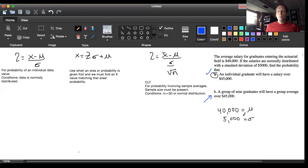The new information in part B is that they're talking about a group of nine graduates with a group average over $45,000. The nine belongs to a sample size, so nine equals my N. And this time $45,000 is a group average, so that's my X bar.